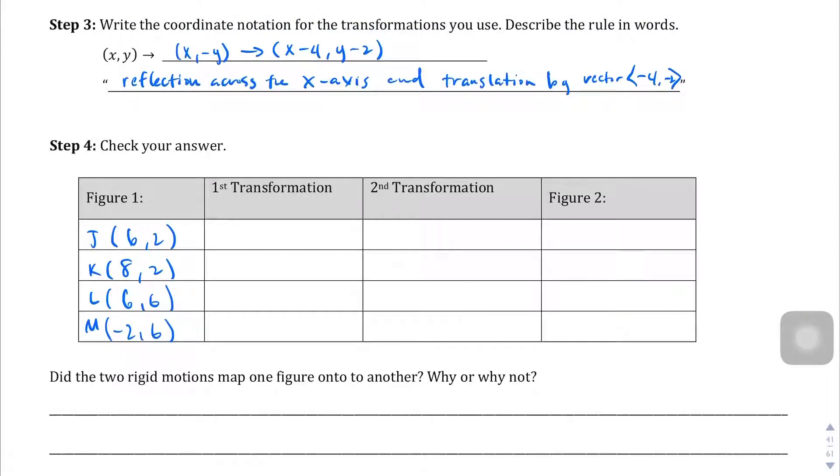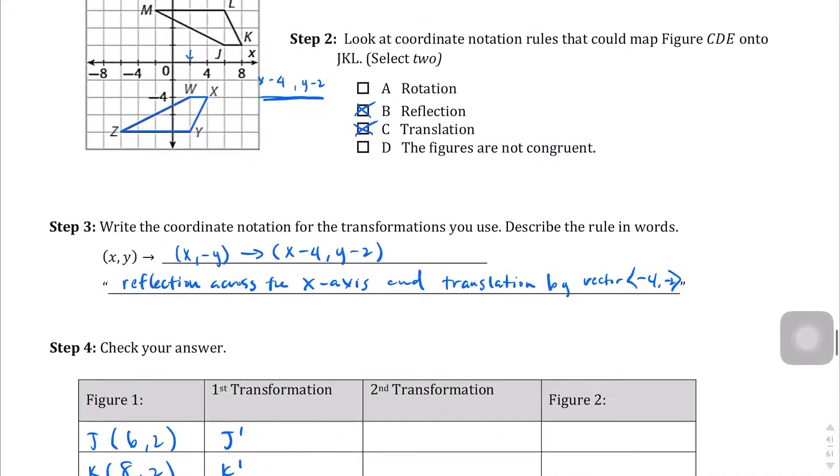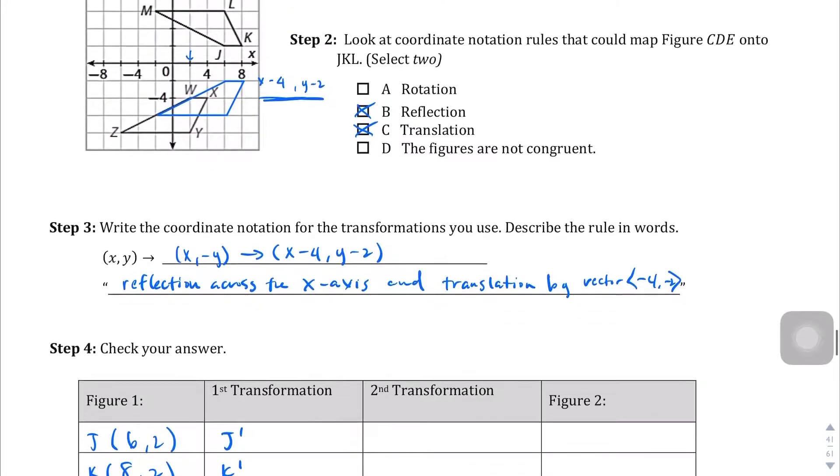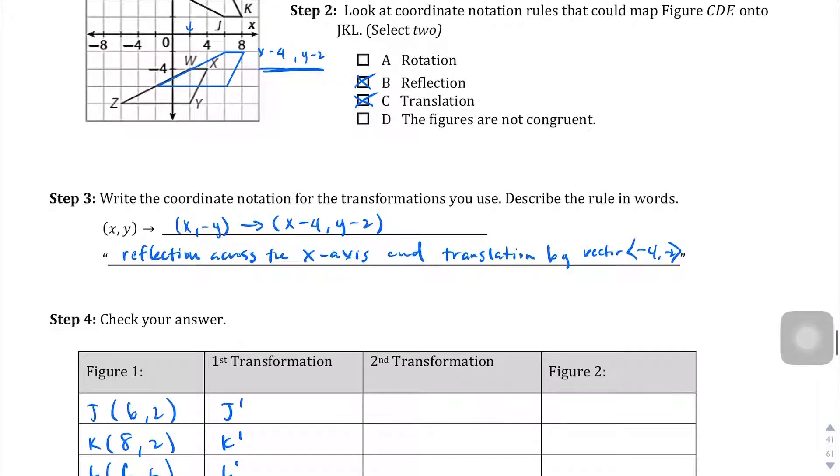And then the first transformation. So, J prime, K prime, L prime, and M prime. Remember that shape is going to be 1 unit down and 2 over back here. So, at that point, J is going to be at (6,-2). K is going to be at (8,-2).